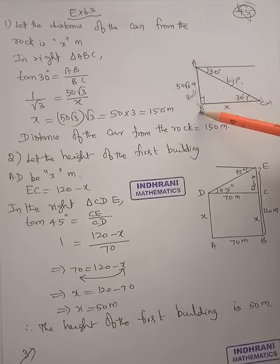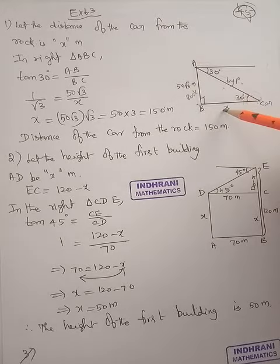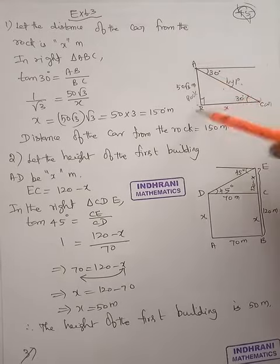Tan 30 is opposite by adjacent, which is AB by BC.